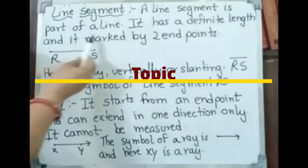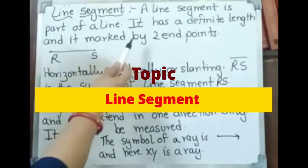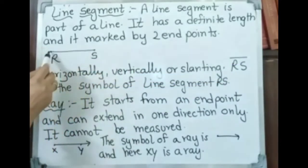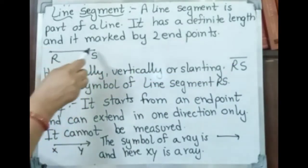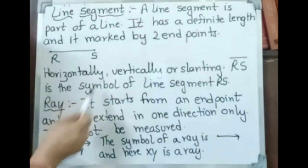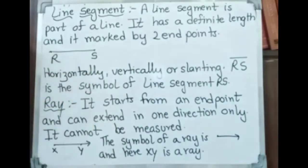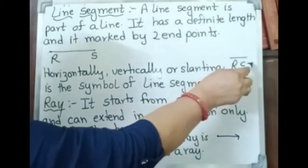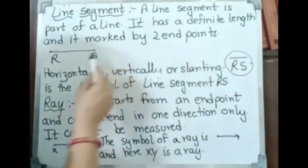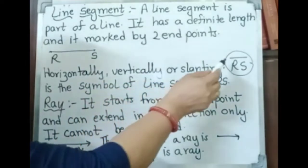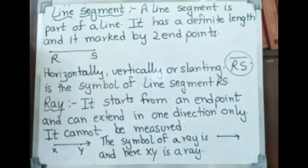A line segment is a part of a line. It has a definite length and is marked by two end points, for example RS. Here we have an end point on each side — RS. It can be horizontal, vertical, or slanting. RS with a bar on top is the symbol of line segment RS. A line segment can be horizontal, vertical, or slanting.